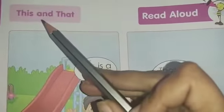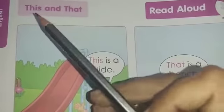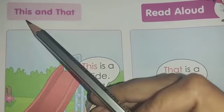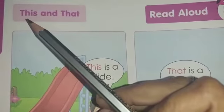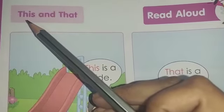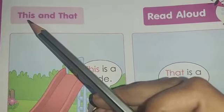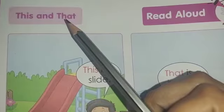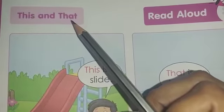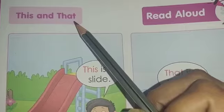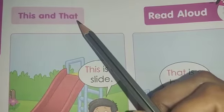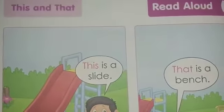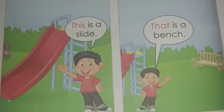On page number eight you have been given the topic 'This and That'. This is used when something is near you — jab koi cheez aapke paas mein hoti hai, then you use the word 'this'. And 'that' is used when something is far off — you have to point out towards it.